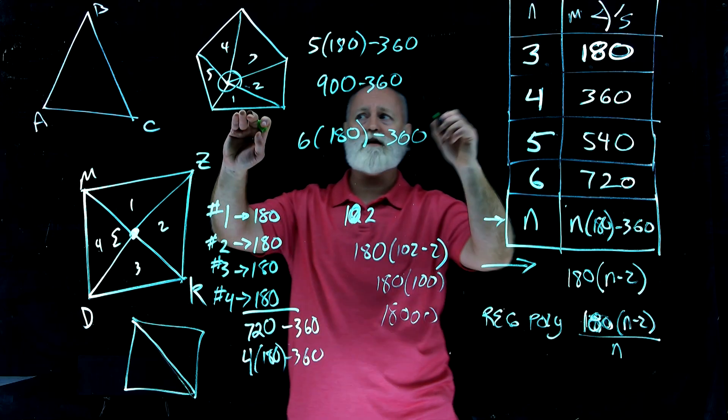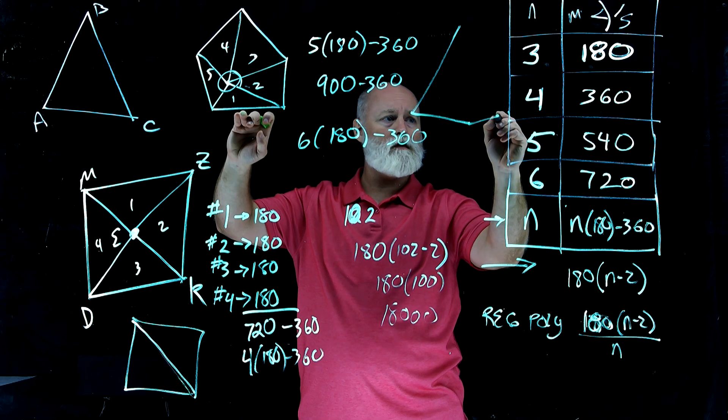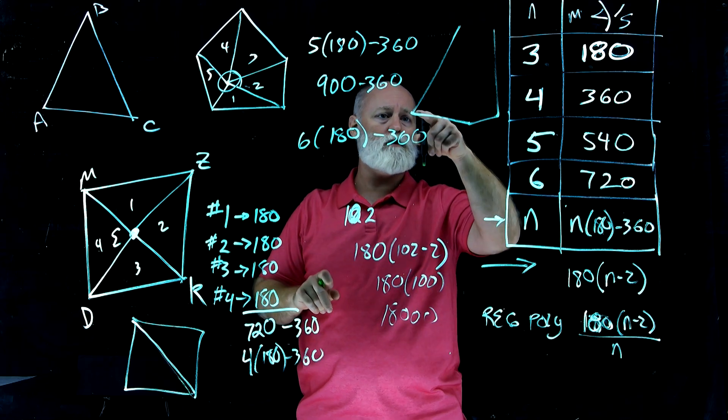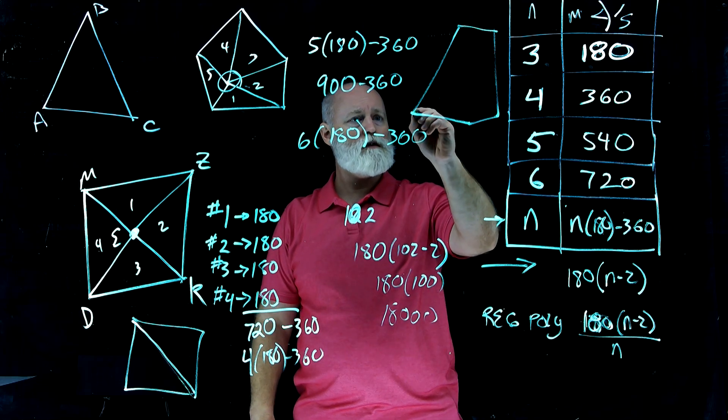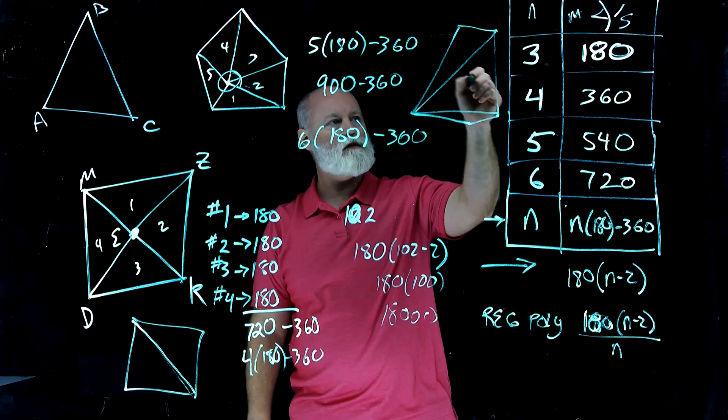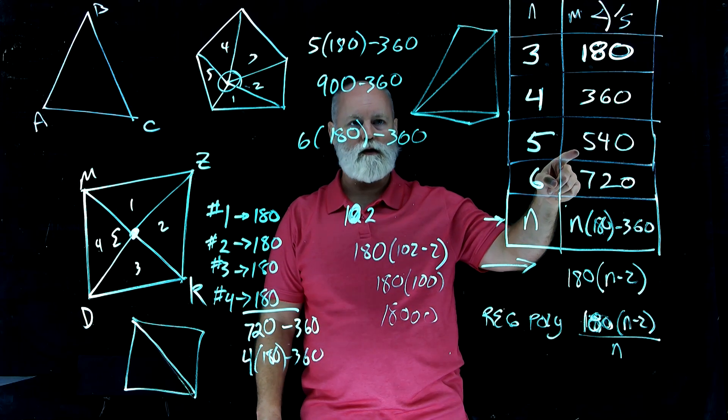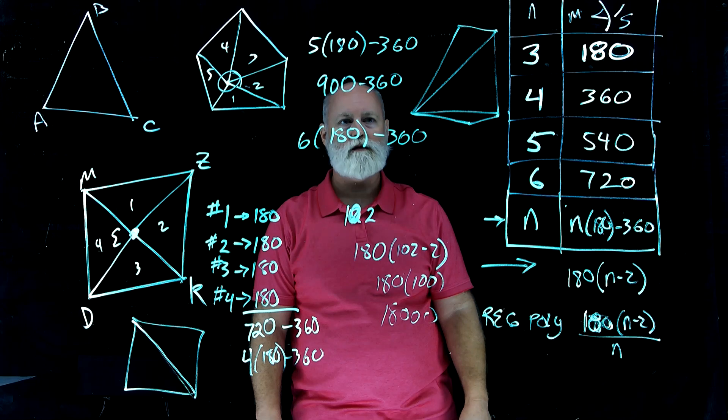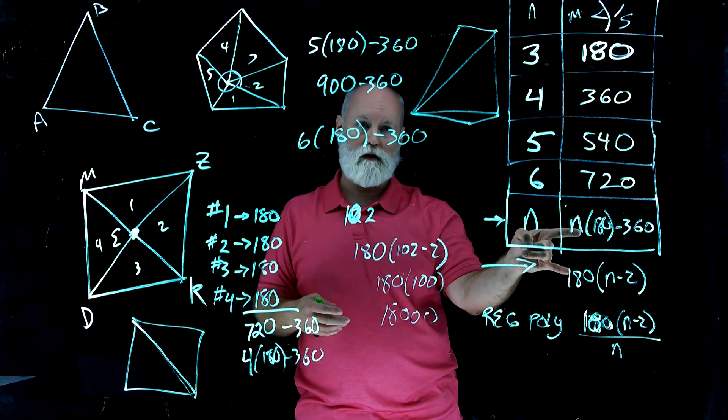What if on the pentagon, instead of drawing all the diagonals, what if I had, let me draw another one here. One, two, three, four, five. Well, that's a funky looking one, isn't it? So let's draw from one vertex. Look at that. I have one, two, three triangles. Five minus two is three. Three times 180 is 540. So two different ways you can actually figure out this exact same formula.